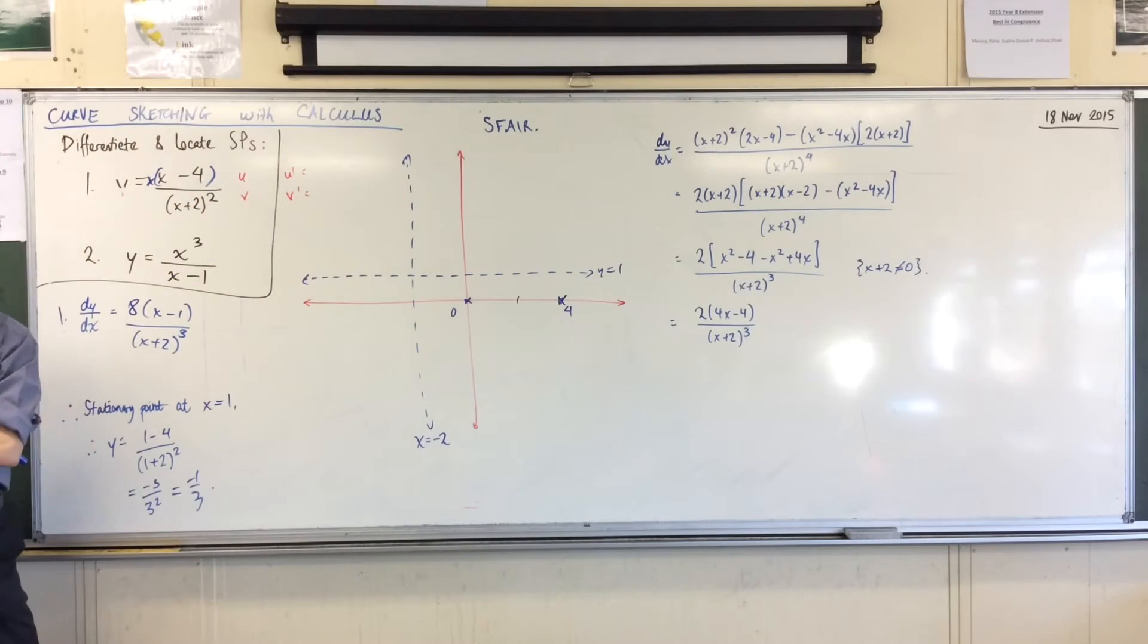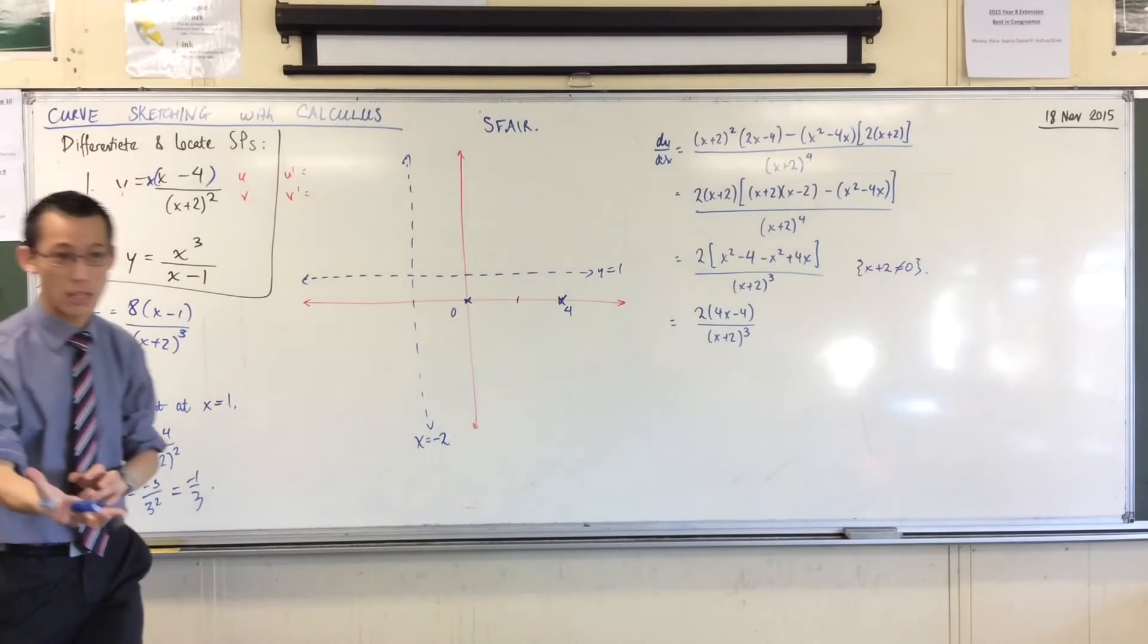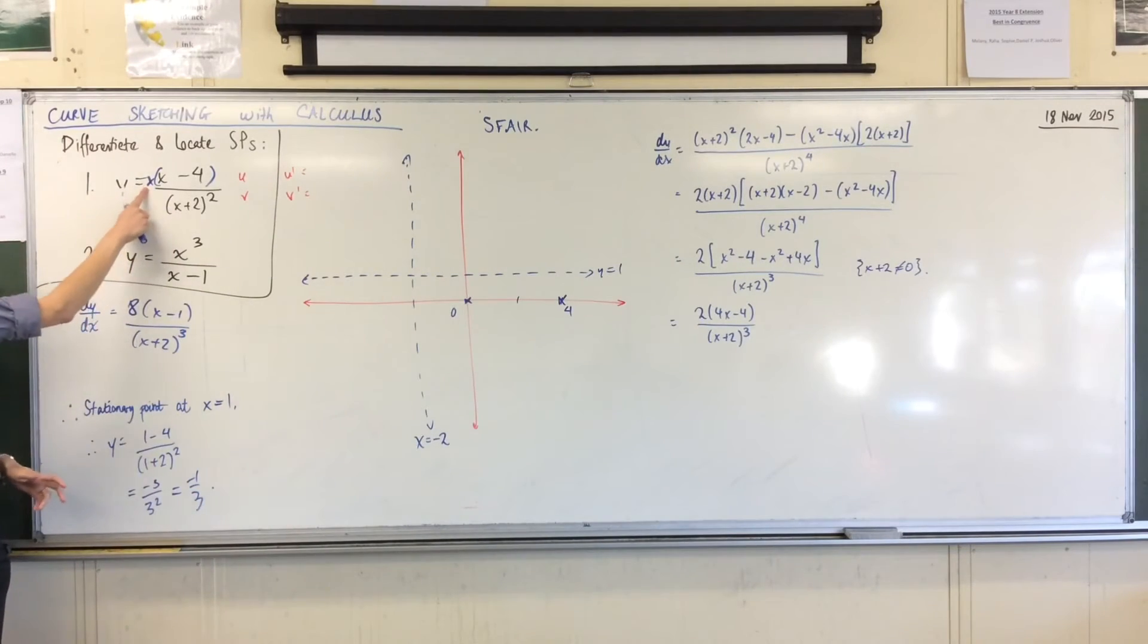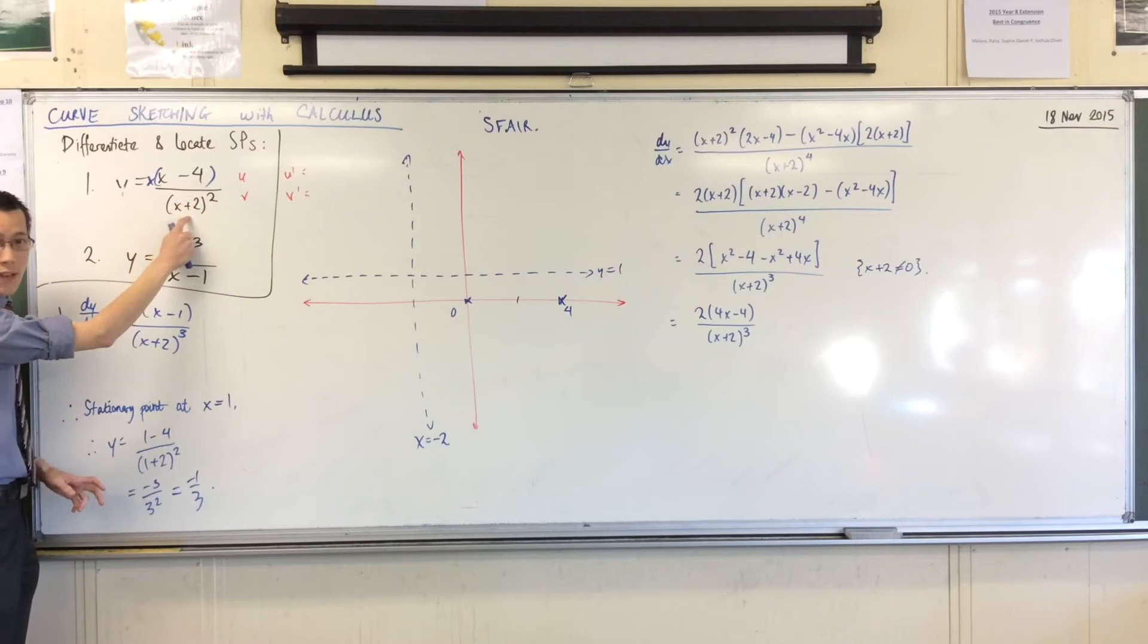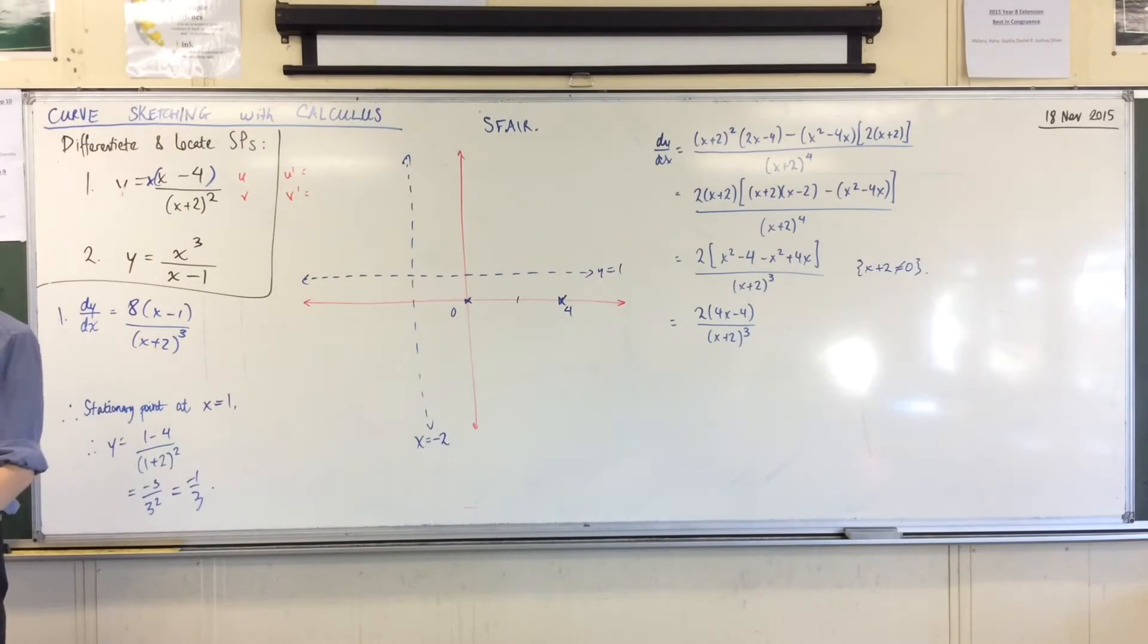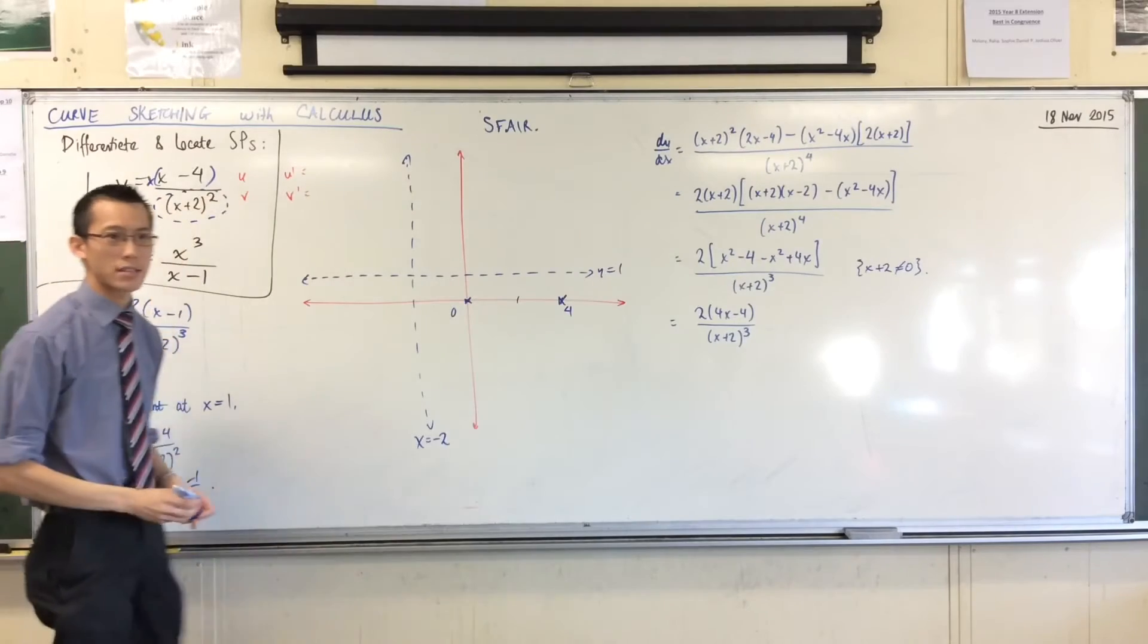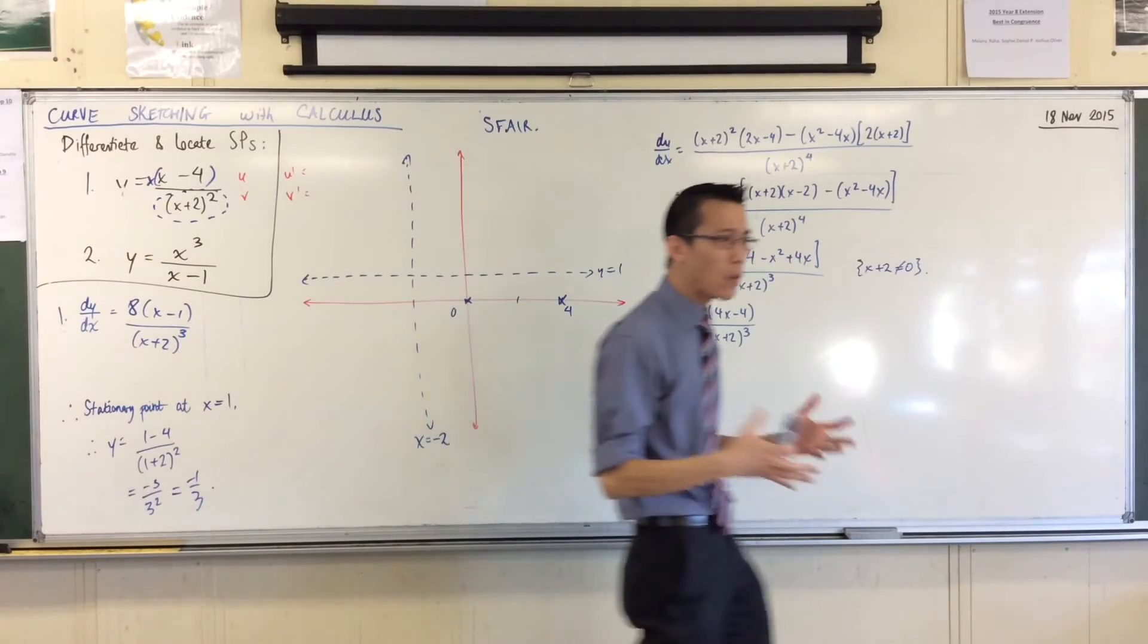But the reason why the factors are important is because they tell me where I'm positive and where I'm negative, okay? Now, x is a factor. x take away 4 is a factor. x plus 2 is a factor, and then x plus 2 is a factor again, okay? Now I just want to point out for that last bit, right? If x plus 2 is a factor, twice,